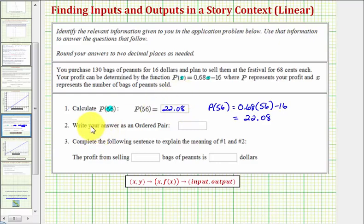Now we are asked to write our answer as an ordered pair. Remember the ordered pair would be in parentheses where we have the input comma the output, or in our case, x comma p(x). So we have (56, 22.08).